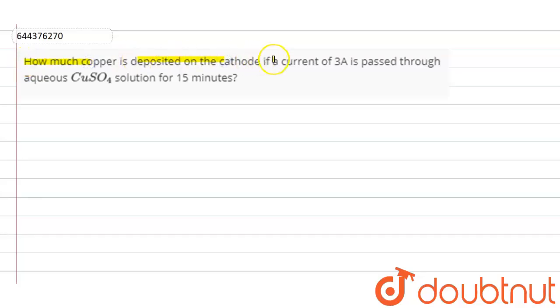The question is: How much copper is deposited on the cathode if a current of 3 amperes passes through aqueous copper sulfate solution for 15 minutes?